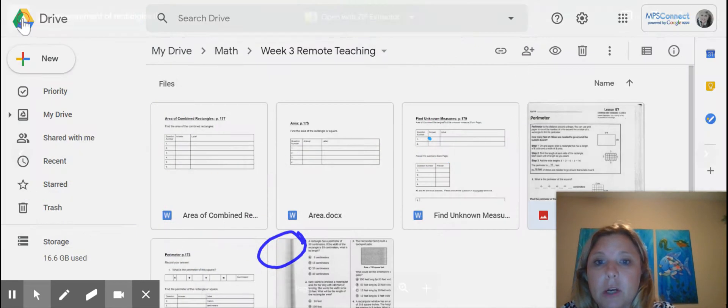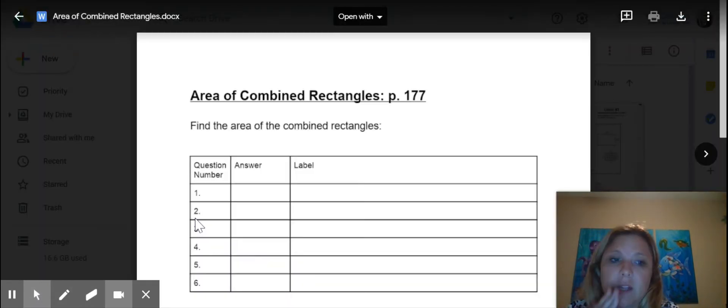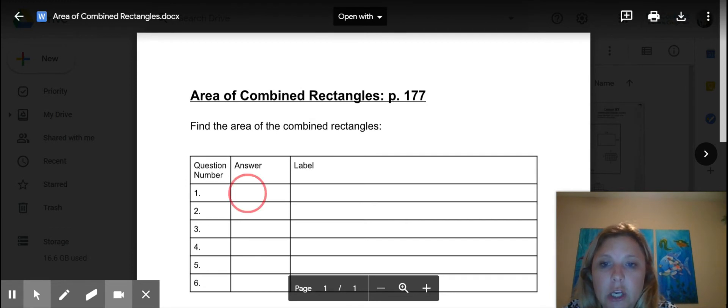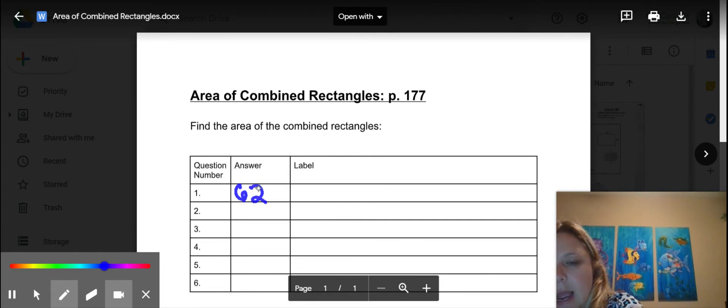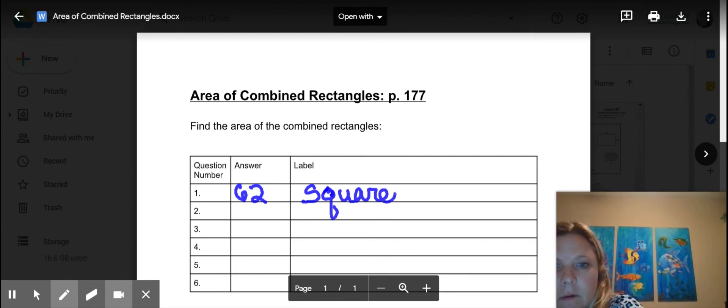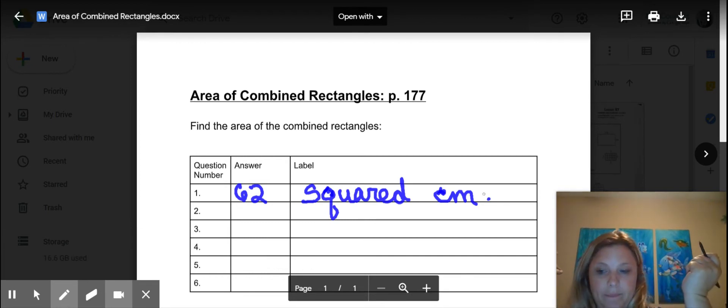I am going to go up and I'm going to show you what it's going to look like on a worksheet. Let me erase everything. And again, this is area of combinations. So I'm going to come to my worksheet that will be on Google Classroom. Question one, you are going to type in or write your answer. It is 62 squared. And I measured it in centimeters. You can abbreviate it if you want, or you can write it out. But that's what it's going to look like for question one. And you are going to do this for six questions.